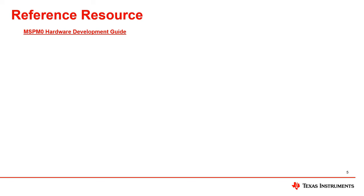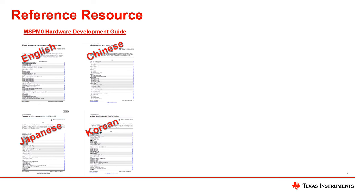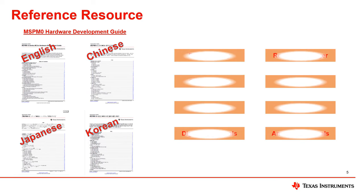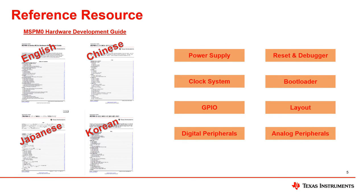For additional considerations, please refer to the MSP M0 MCU hardware development guide, which has English, Chinese, Japanese, and Korean versions. It includes design guidelines for power supply, reset, debugger circuits, clock system, bootloader, GPIO, digital and analog peripherals, layout guidelines, and more.